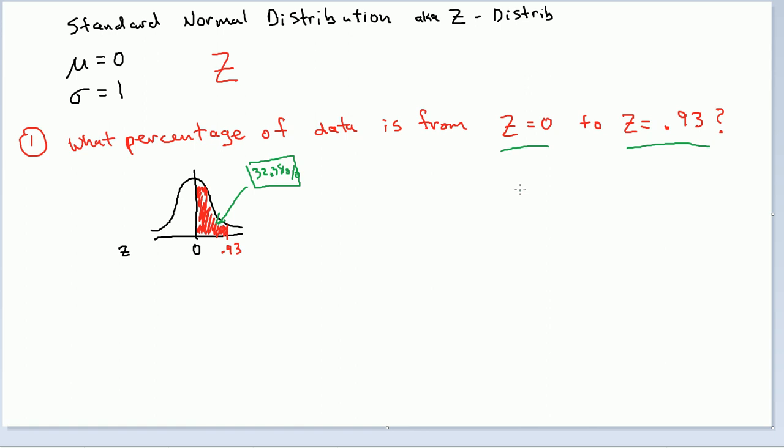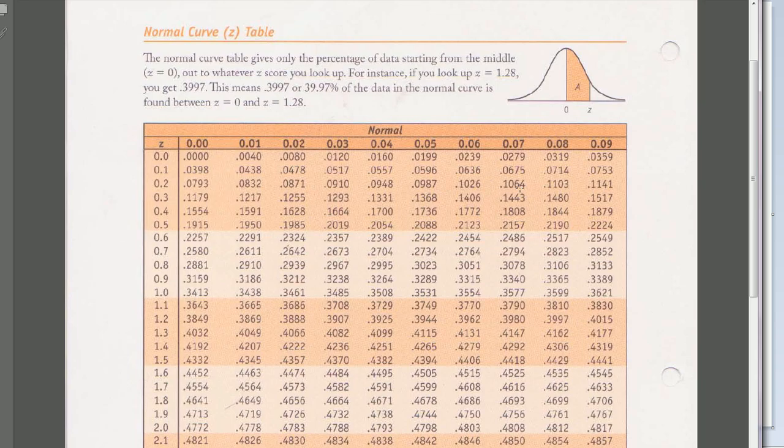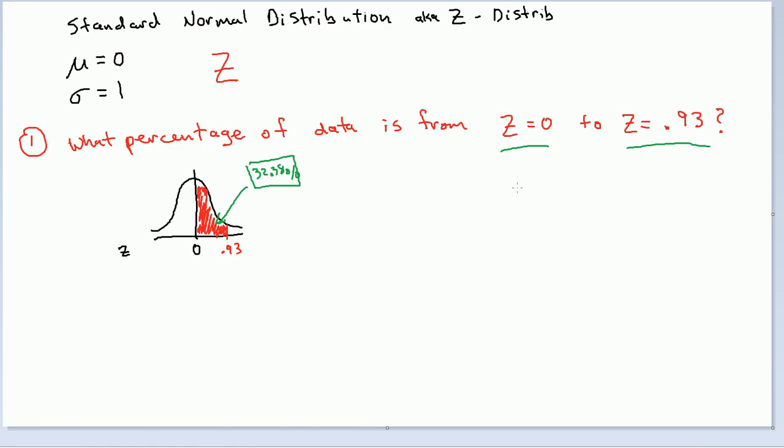So that's how, that's the percentage of data from 0 to positive 0.93. Notice that this question asked me z values. So this was very straightforward. The table that we use is the z distribution. The question was asking about z values. So it was a very straightforward question. And on top of that, the question asked us to get the percentage of data from 0 to some value. So we had a nice simple anchor point, which was 0.